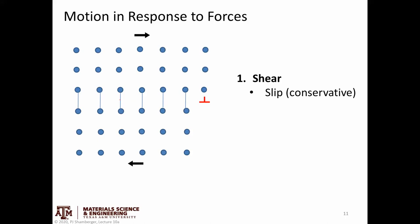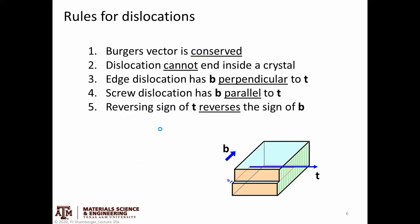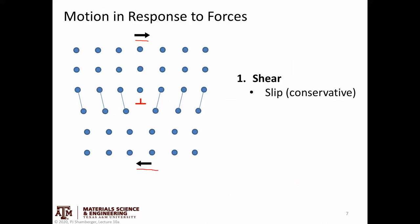This kind of motion is called slip. It's conservative motion because we don't have to add or remove atoms from near the dislocation for that motion to occur.